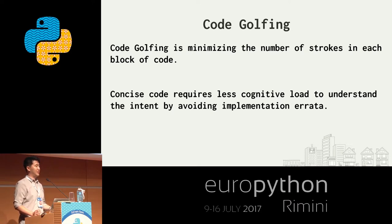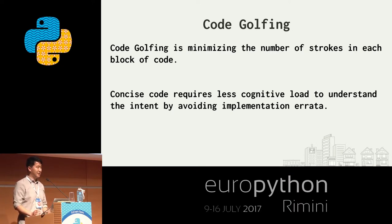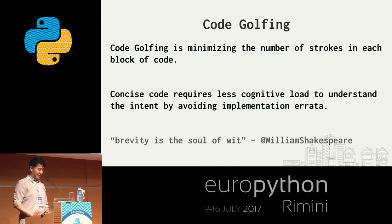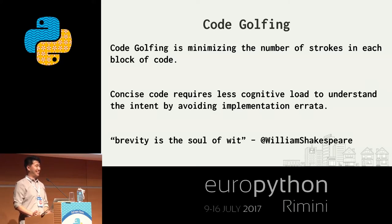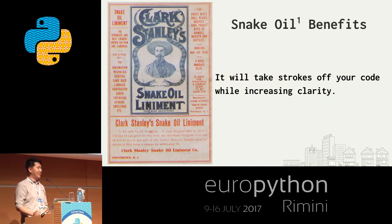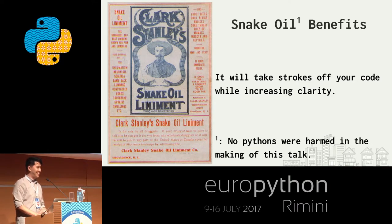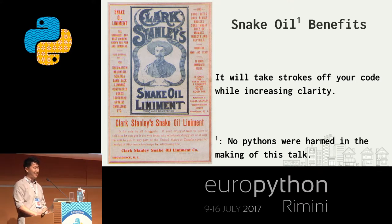A great exercise when looking at concise code is to ask: can I read this out loud in plain English very simply? To quote William Shakespeare, brevity is the soul of wit — shorter is better. I sound a bit like a snake oil salesman when I say that shortening your code will increase your clarity. And of course, because this is snake oil, I've harmed no pythons in the making of this talk.